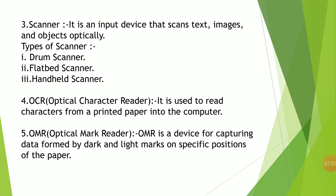The next input device is OCR, which stands for Optical Character Reader. It is used to read characters from printed paper into a computer. The shape of the character is recognized by OCR through a light source in conjunction with photoelectric cells. When a text page is scanned, it is converted into a computer-readable form and reproduced in a form that looks similar to a typed page. After scanning, it converts into binary or computer-understandable form.